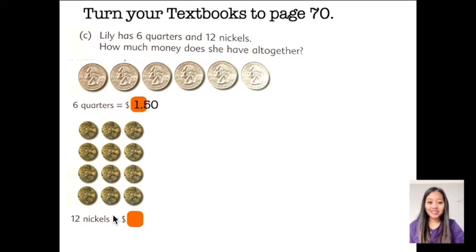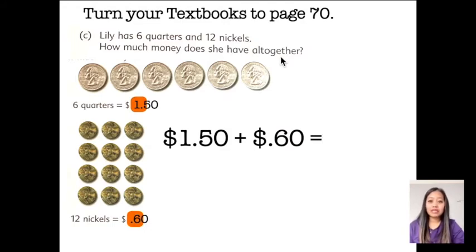The answer is 60 cents. Because we multiply 1 nickel to 12. So, that's 5 nickels or 5 cents times 12. Alright. So, here what we should do is we just put them all together. Because it says here, how much money does she have all together? So, obviously, we will add.